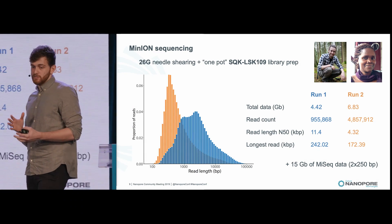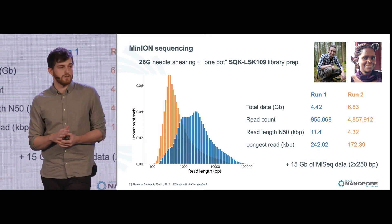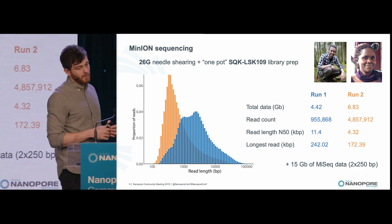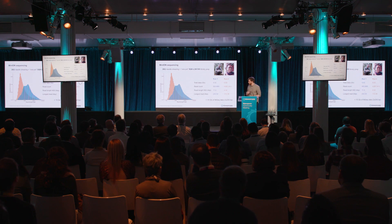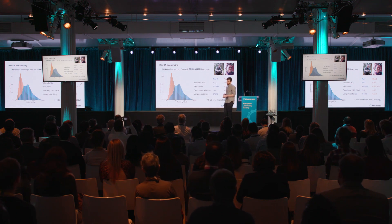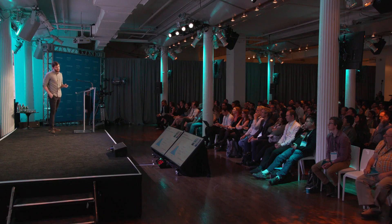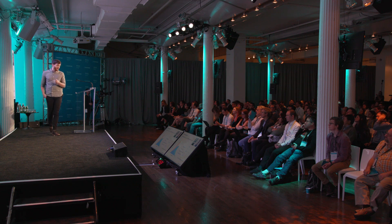We opted for a 26G needle shearing approach — we could get these needles at the nearby pharmacy — combined with a slightly modified LSK109 protocol. We did two runs in the end. The first one went okay: about four and a half gigabases with a reasonable read length distribution. The second run, done by Stefan, produced more data but with worse read length, because I had essentially cooked the DNA in an attempt to get it into solution. All told, we ended up with about 11 gigabases of MinION data.